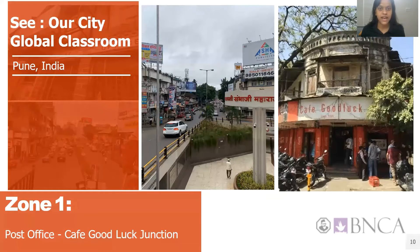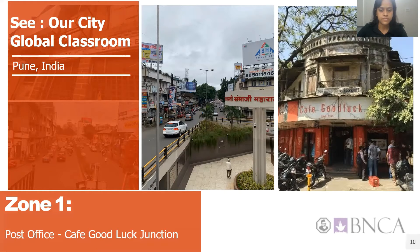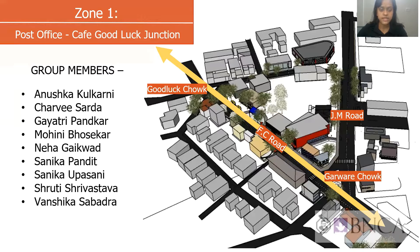Hi everyone, I'm Sanika Pandit and this is our project for the CRC City Global Classroom. The study area chosen was Garwari Underpass and three zones allied to it. The area was further divided into three zones by creating three different groups. I'll be presenting the design proposals made for Zone 1. I, along with eight other members, studied Zone 1, which is from India Post to Goodluck Cafe, by doing observations, identifying issues, and coming up with design interventions.